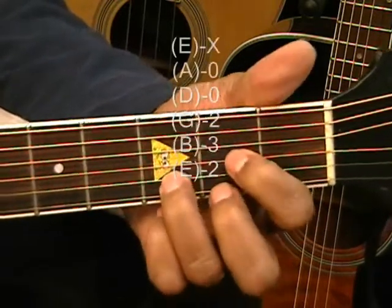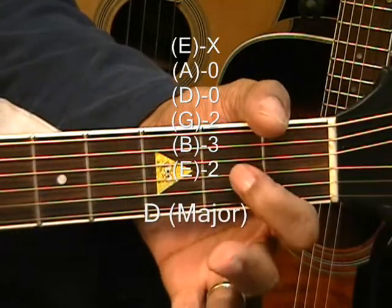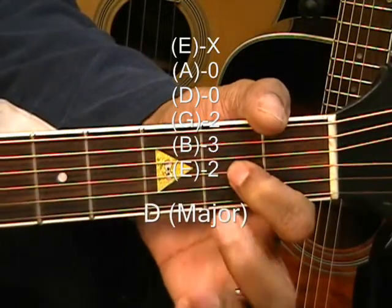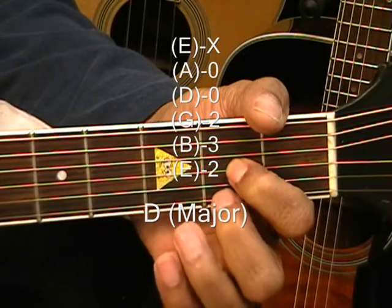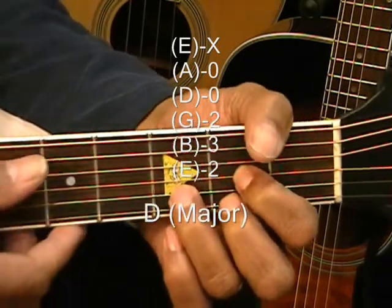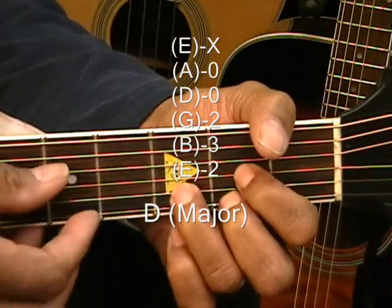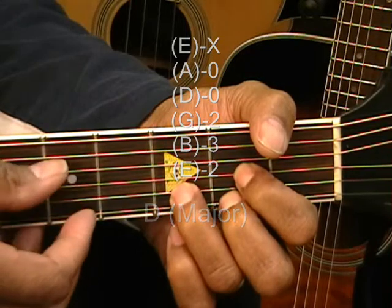We're going to make a D chord by going to the second fret with the first finger on the G string, and the middle finger going to the high E string at the second fret. The ring finger goes to the third fret, and we play that chord from the D. Like that.